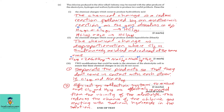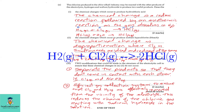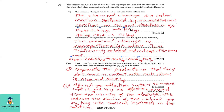Part e, question one: The chlorine produced in the chloroalkali industry may be reacted with hydrogen and sodium hydroxide to produce two useful products. Describe the chemical changes which occur to produce hydrochloric acid. There are two marks, requiring two equations. The first is a redox reaction: H₂ + Cl₂ → 2HCl, where H goes from 0 to H⁺ and Cl goes from 0 to Cl⁻. The second is HCl dissolving in water to form hydrochloric acid: HCl(g) → HCl(aq).